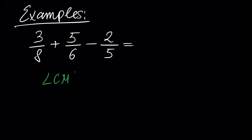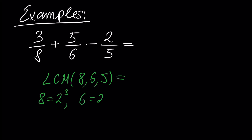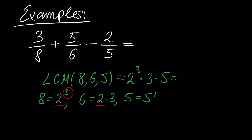The least common multiple of 8, 6, and 5: the prime factorization of 8 is 2 to the power of 3, the factorization of 6 is 2 times 3, and 5 is just 5 to the power of 1. To find the least common multiple we take each prime with its maximum power: 2 to the power of 3, times 3, times 5. 2 to the power of 3 is 8, and 8 times 3 times 5 is 120.